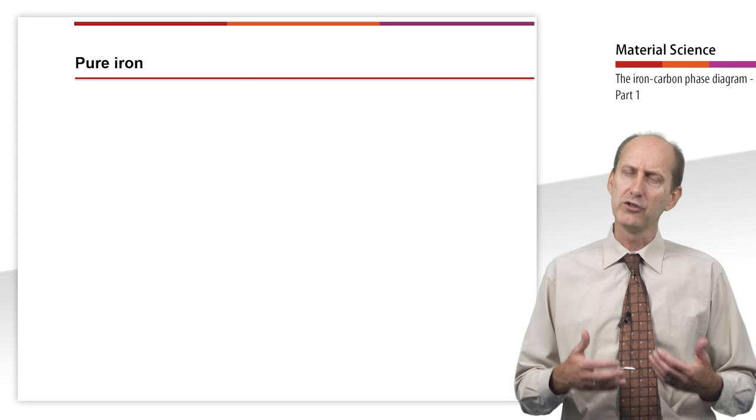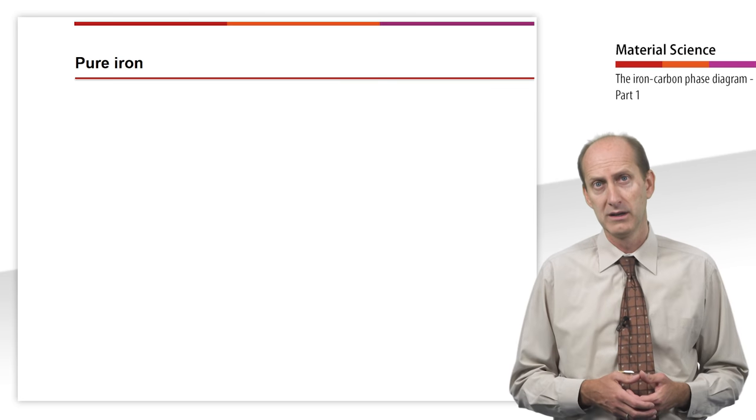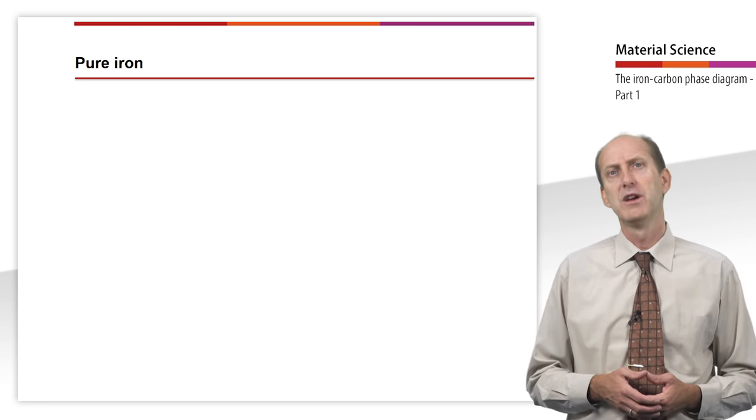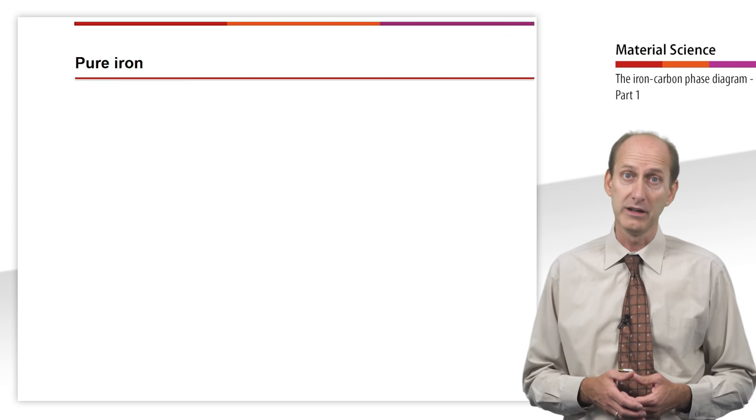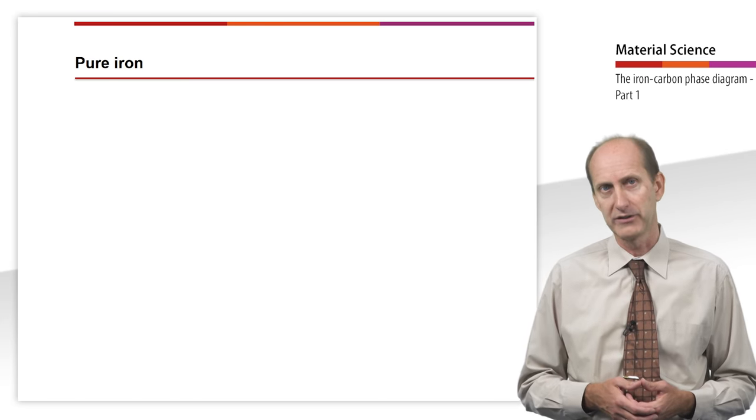Currently more than 2500 steel grades are available. This is due to the fact that there are various possibilities to modify the properties of steel, either by heat treatment or with the help of alloying elements.